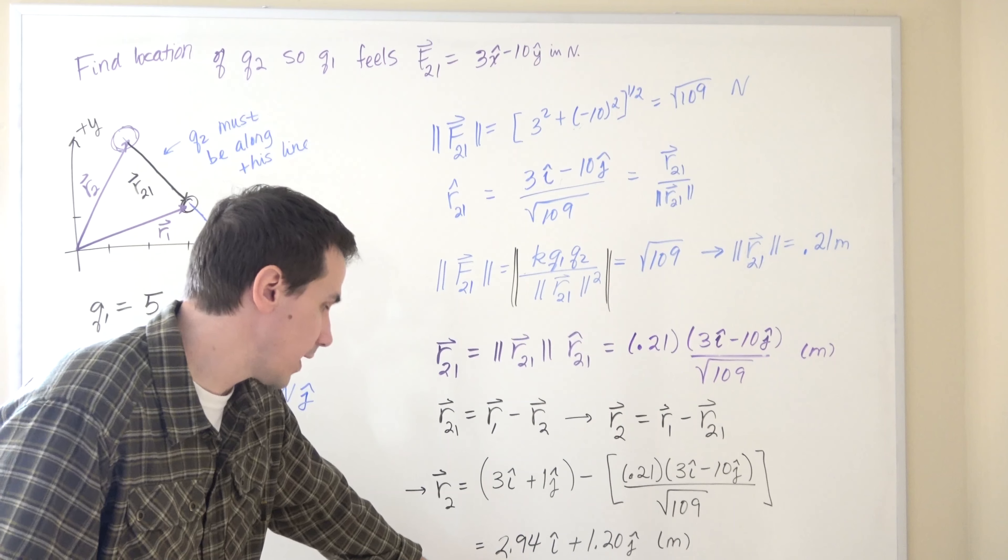Plugging in numbers here, we find that it is 2.94 meters in the i-hat direction and 1.20 meters in the j-hat direction is the r2 vector, the vector that gives me the location of charge 2.